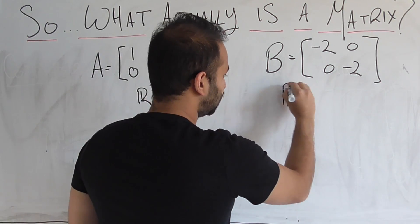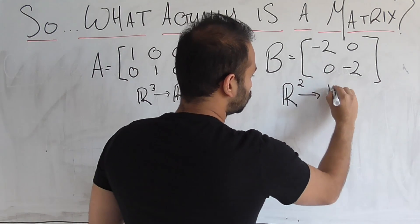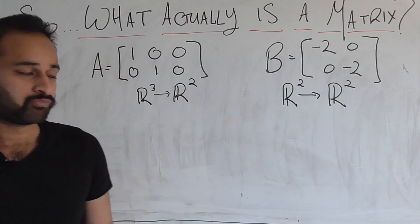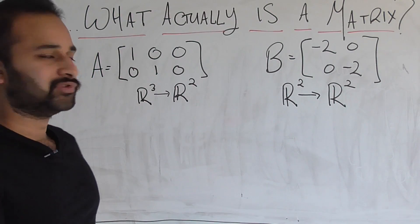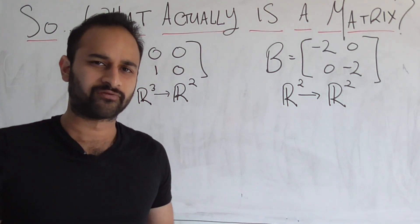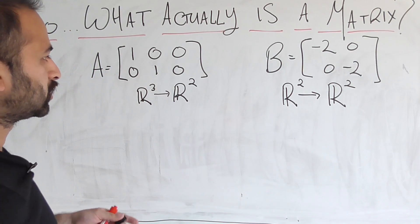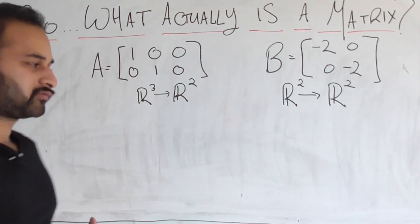Matrix B, on the other hand, maps a vector living in two-dimensional space to a potentially different vector living in two-dimensional space. Now let's look at geometrically how these transformations actually look to get a feel for what does a linear transformation actually imply. The harder one to look at will be A, so let's start with A first.